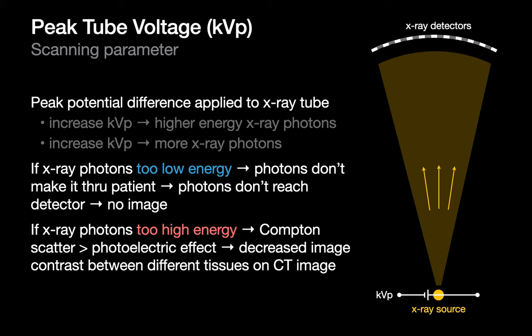Peak tube voltage (KVP) influences the energy each individual x-ray photon carries. The higher the KVP, the more energy packaged in each photon. Too little energy and photons don't make it through the patient — not enough hit the detector to form an image. With too much energy, the detector collects lots of photons, but the relative ability of different materials to block x-rays — like water versus muscle — becomes similar, so image contrast and ability to distinguish tissue types suffers.